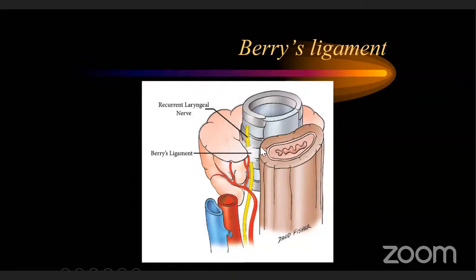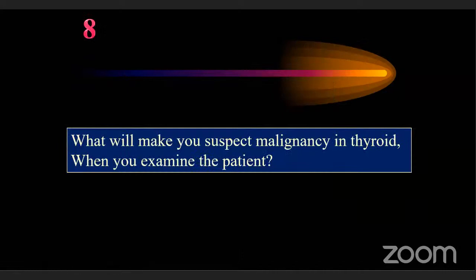As an undergraduate, the commonest cases given in examination: first, non-toxic non-malignant multinodular goiter; second, non-toxic solitary nodule thyroid; third, partly treated Graves' disease; fourth (rare), malignancy; fifth, Hashimoto's thyroiditis. Keep these five conditions in mind. Don't make rare diagnoses like Riedel's thyroiditis or anaplastic carcinoma in undergraduate exams unless there is strong evidence.